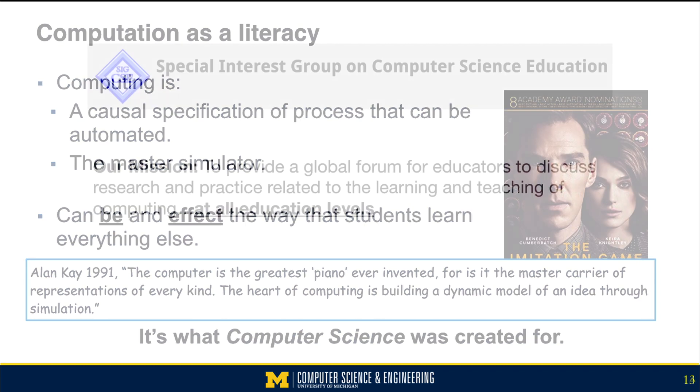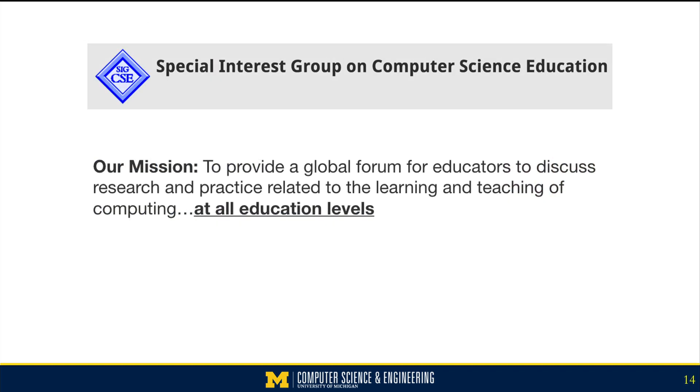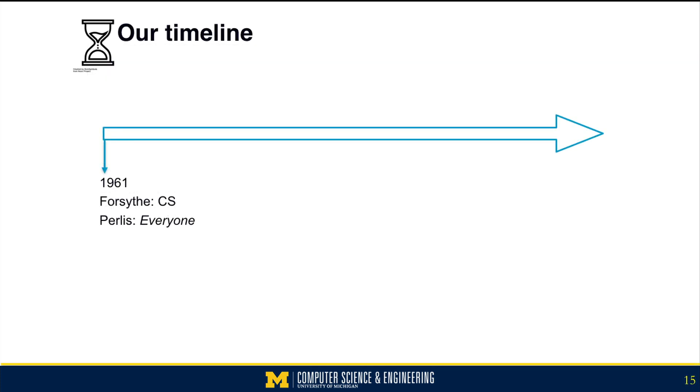Let me again return to that mission of the ACM SIGCSE. Explicitly in the mission is that we want to reach all education levels. This idea of teaching computer science for all is something that we own. Let's think about where we are so far in the history that I'm laying out for you. In 1961, George Forsyth used the term computer science for the first time in the Journal of Engineering Education. Alan Perlis made the argument that this computer science stuff is for everybody.